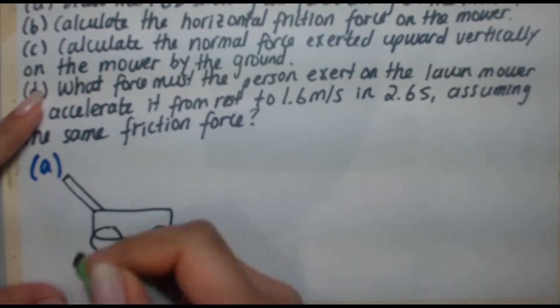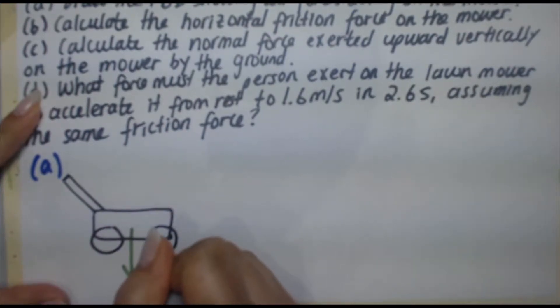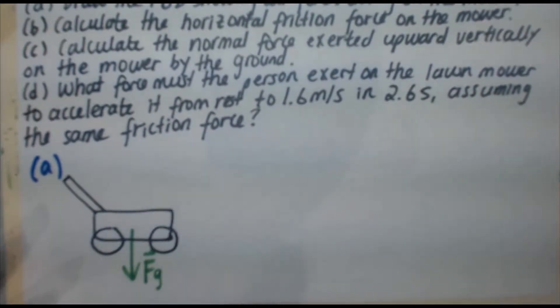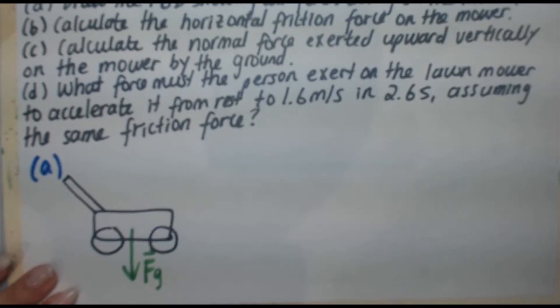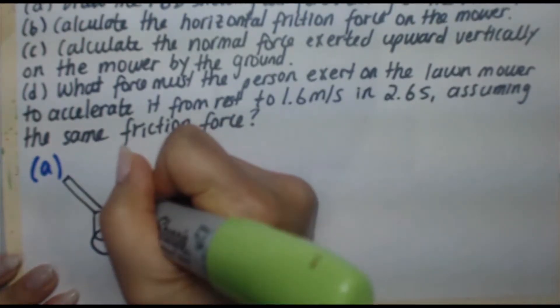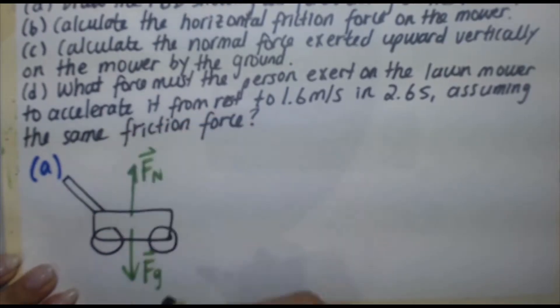Because we know there's a gravitational force acting on this lawnmower. So FG is coming down. Now, the lawnmower sits on the ground, and due to the force of gravity going down, the ground pushes back up on the lawnmower. That's called the normal force going up.